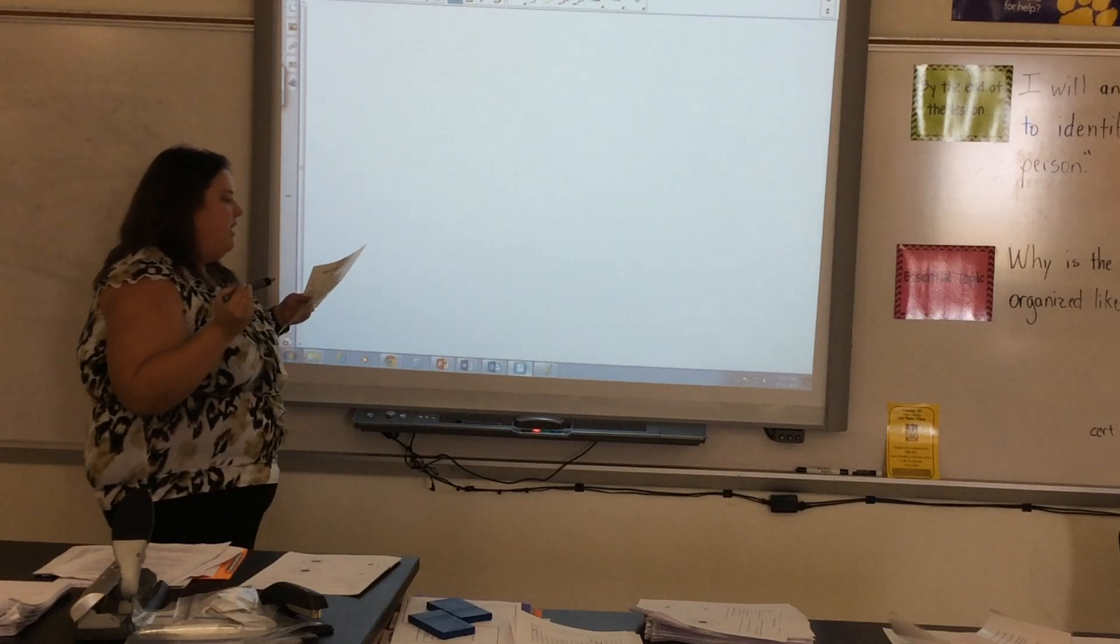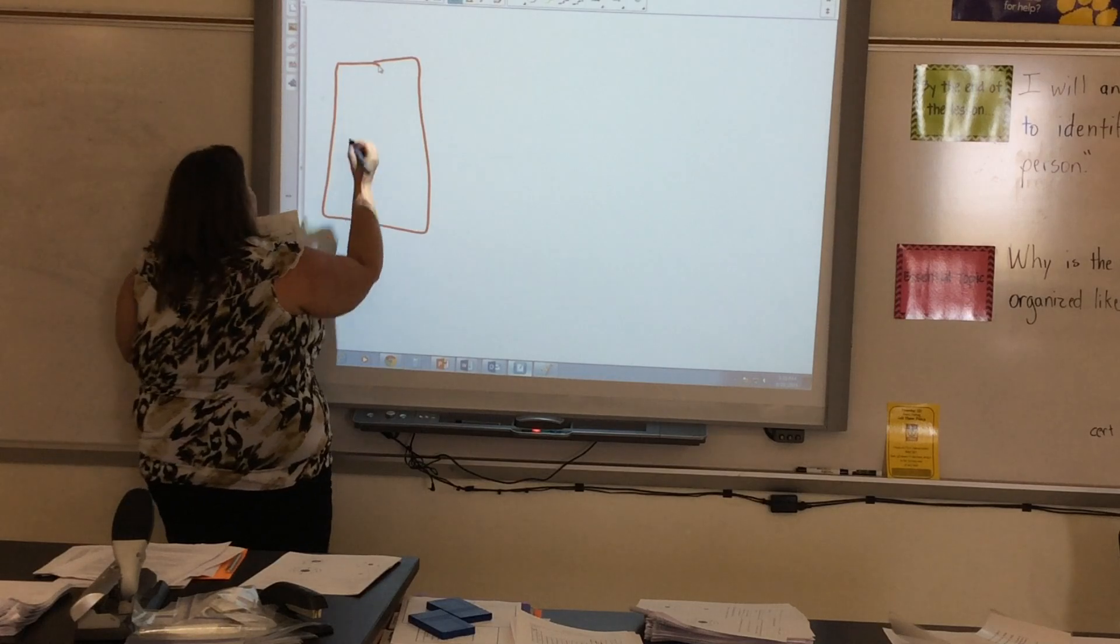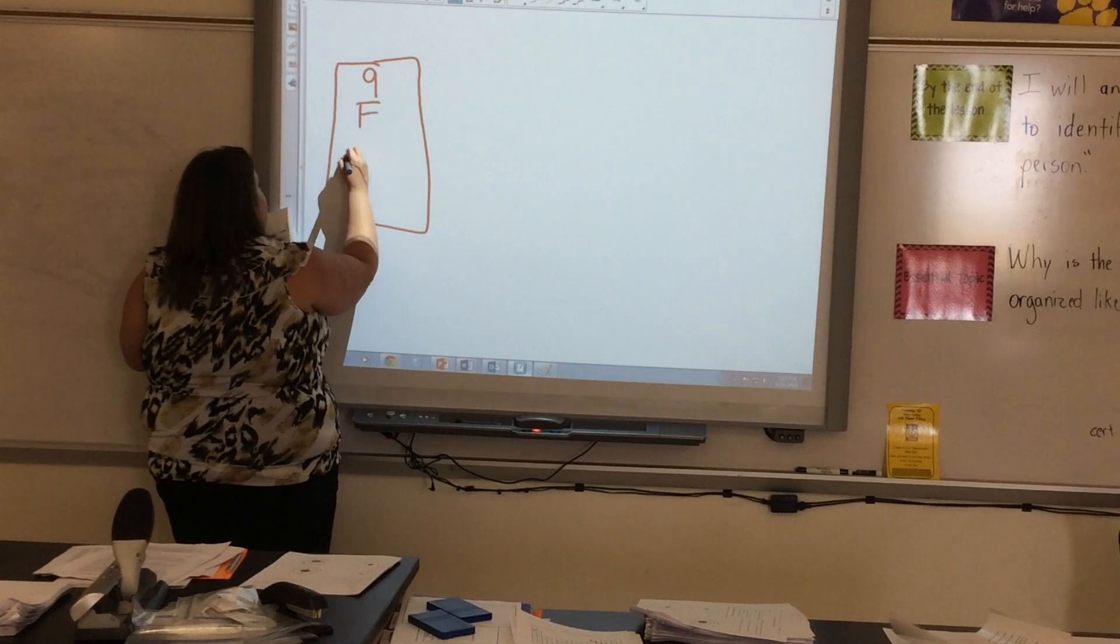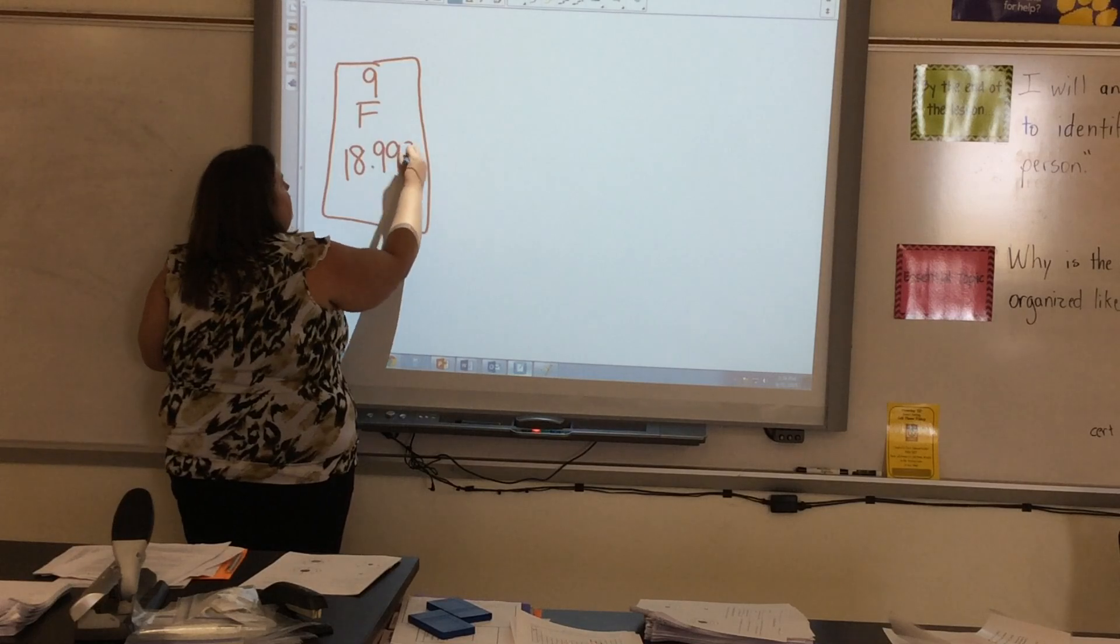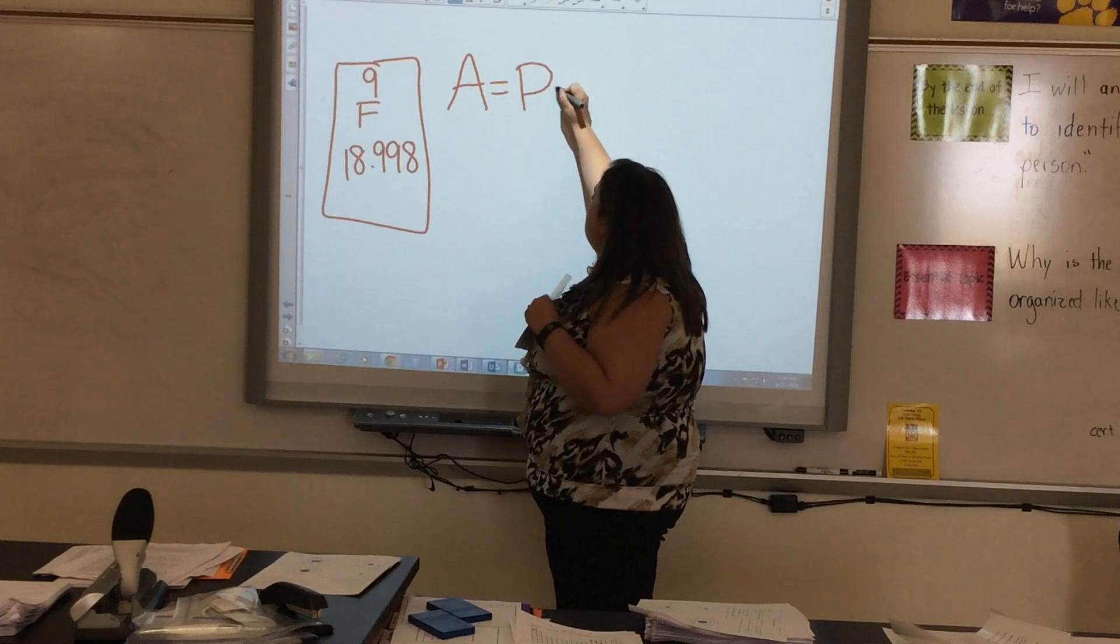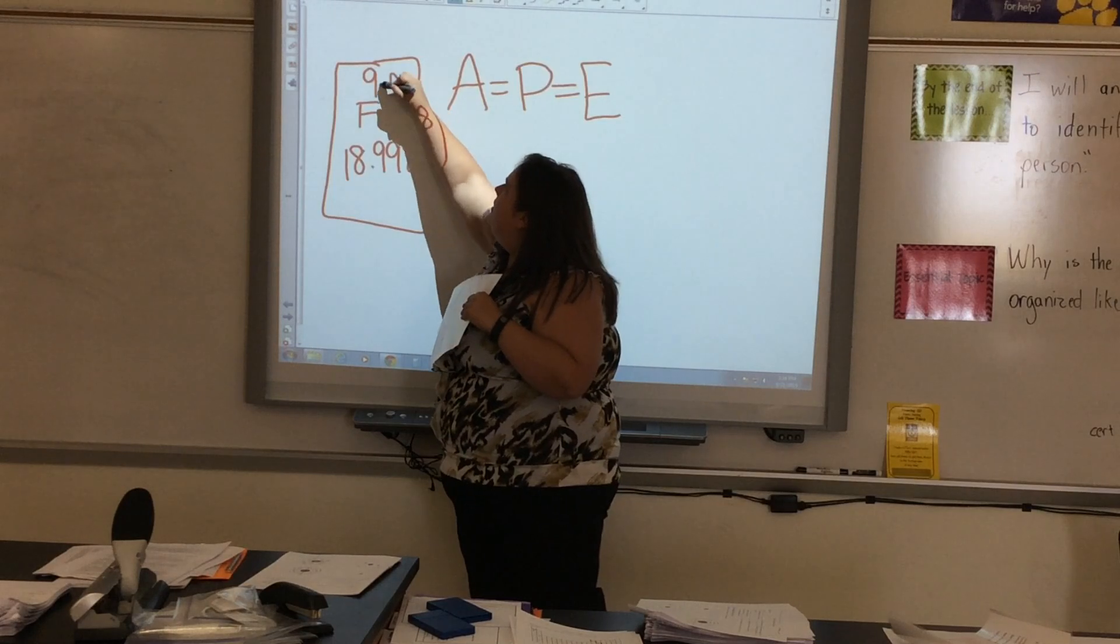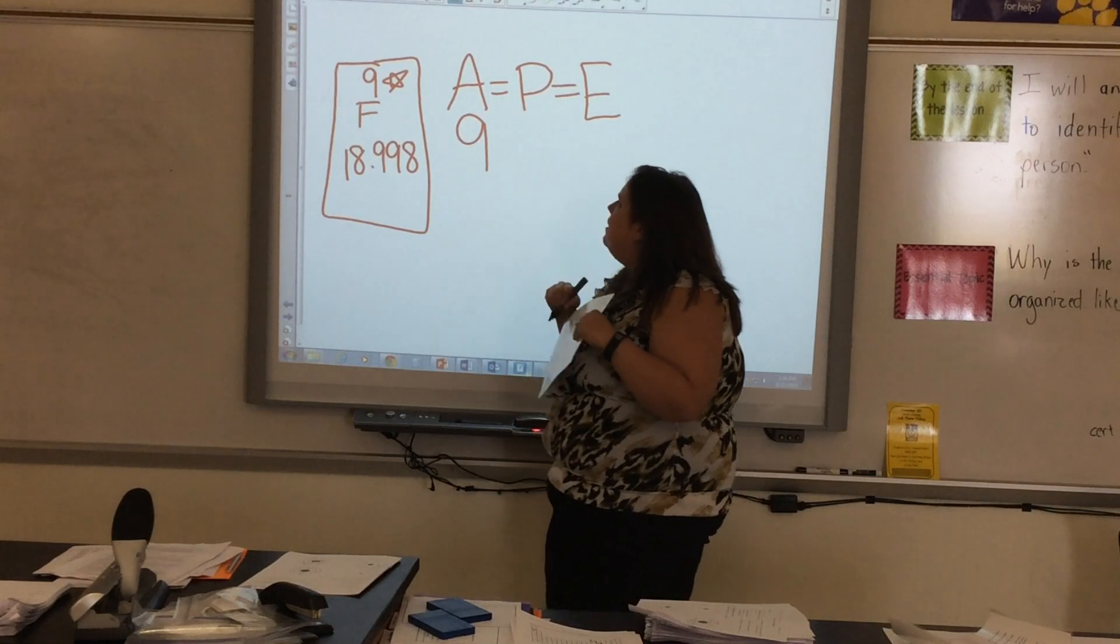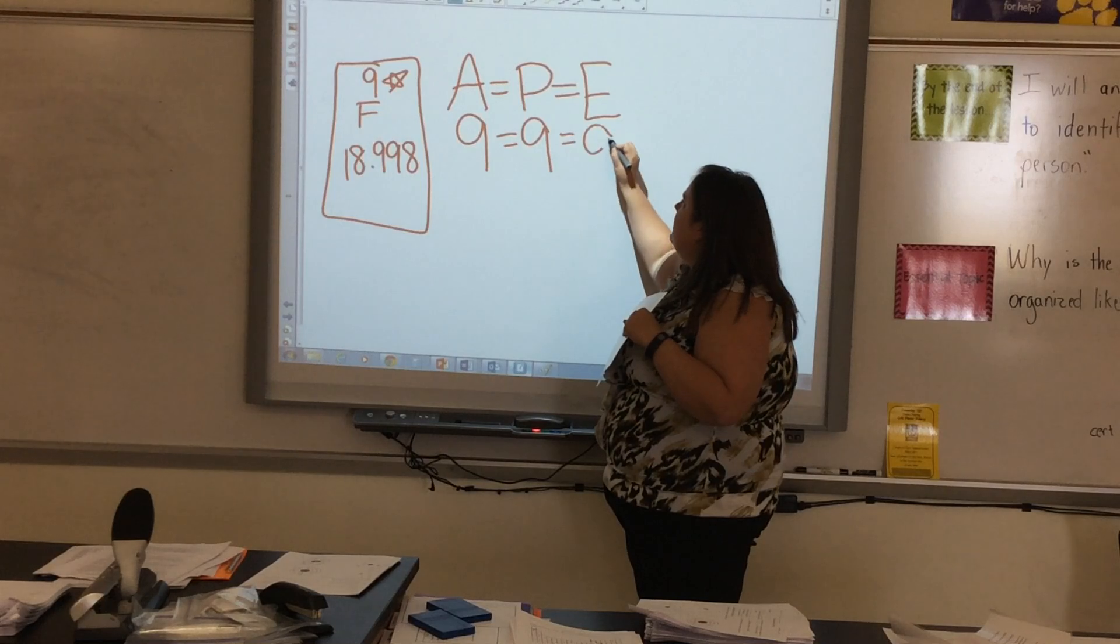We're going to do an example of fluorine. So for fluorine, I've got the atomic number is 9, and it's got a mass of 18.998. So if I do APE MAN, A is equal to P, P is equal to E. So my atomic number is right here. So my atomic number is 9. So if my atomic number is 9, I know I have 9 protons and 9 electrons.